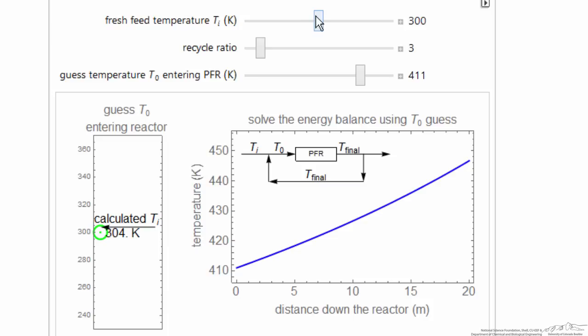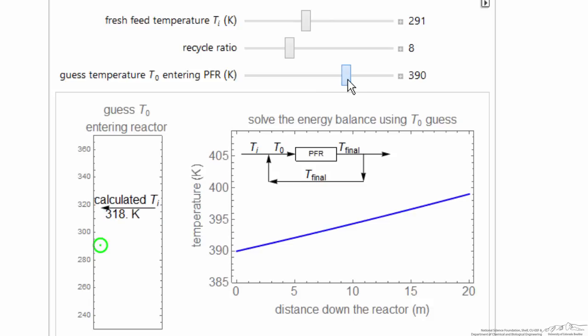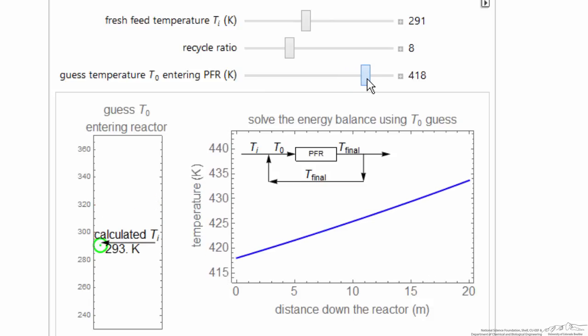Here's the interactive simulation on the Wolfram site. We can vary the feed temperature, and you can see the green circle is going to move. We can vary the recycle ratio, and as the recycle ratio gets higher, you'll notice the gradient through the plug flow reactor is much smaller because there's so much recycle.